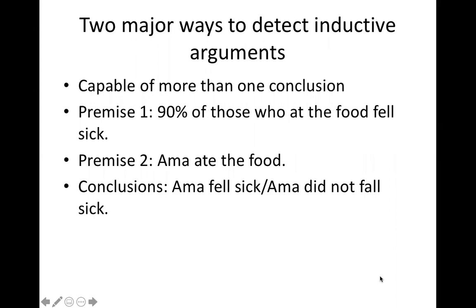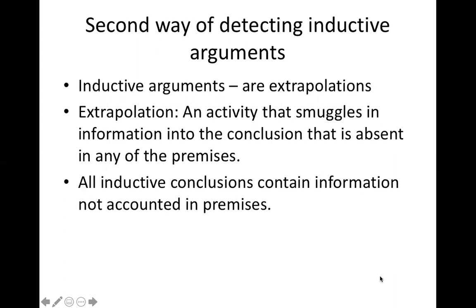How do we detect inductive arguments? Two major ways: first, they are capable of more than one conclusion — for example, '90% of those who ate the food fell sick, Ama ate the food,' gives two possible conclusions: Ama fell sick, or Ama did not fall sick. Second, inductive arguments are extrapolations. An extrapolation smuggles information into the conclusion that is absent in any of the premises — all inductive conclusions contain information not accounted for in the premises.